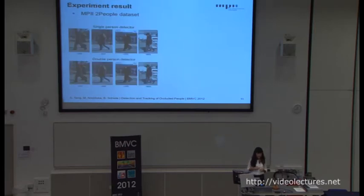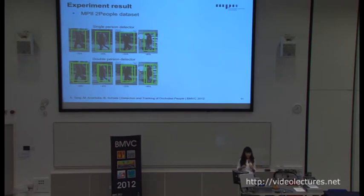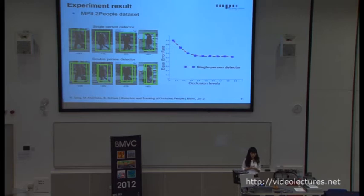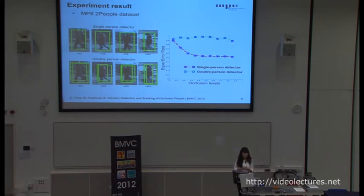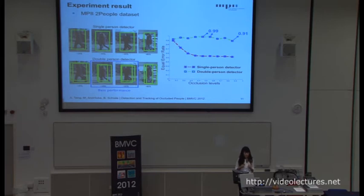Same as the single person detector, we quantize the performance of our double-person detector on the two-people dataset. For the single person detector, it only detects one of the two people. But for our double-person detector, we successfully detect the presence of two people and also precisely predict the bounding box of each individual. Our double-person detector achieves more than 90% recall for all occlusion levels, which is a significant improvement over the single person detector. An interesting observation is that we get the best performance for intermediate occlusion levels, which present the most discriminative occlusion patterns, showing that person-person occlusion patterns are powerful and can help detect the presence of two people.